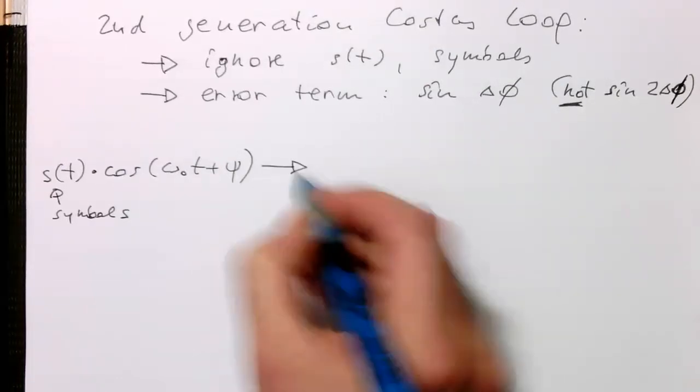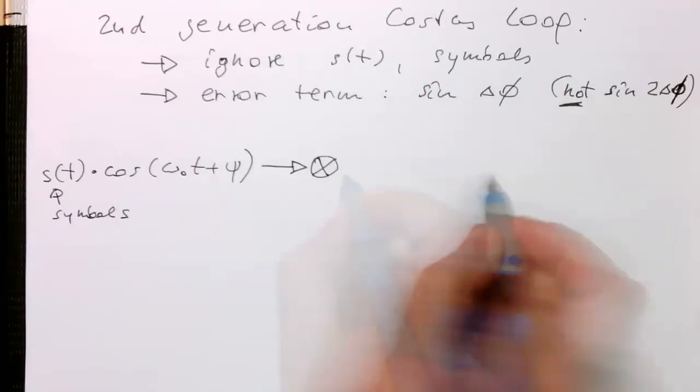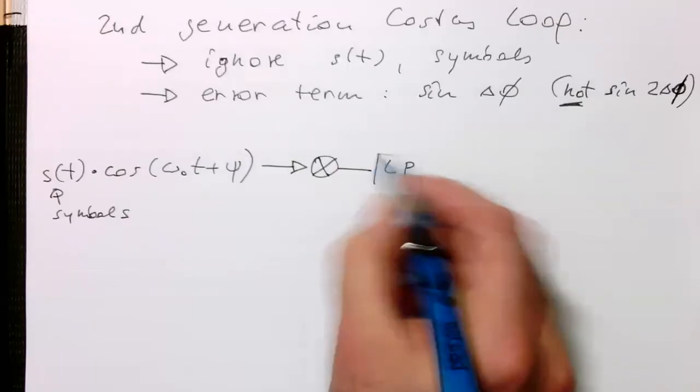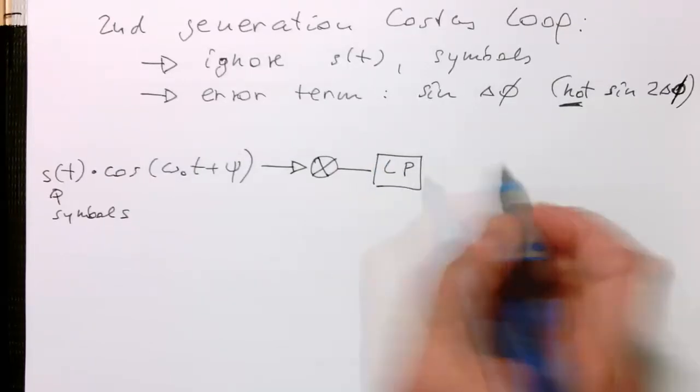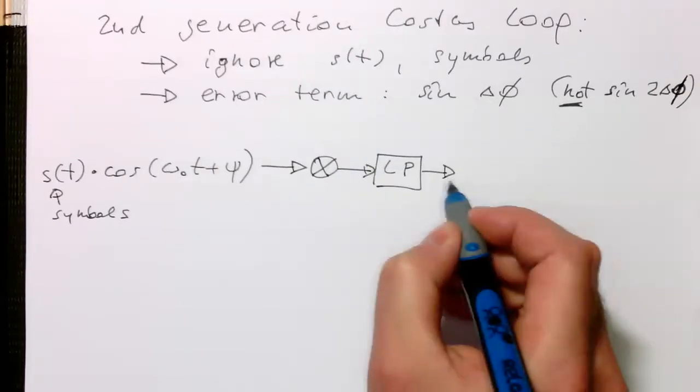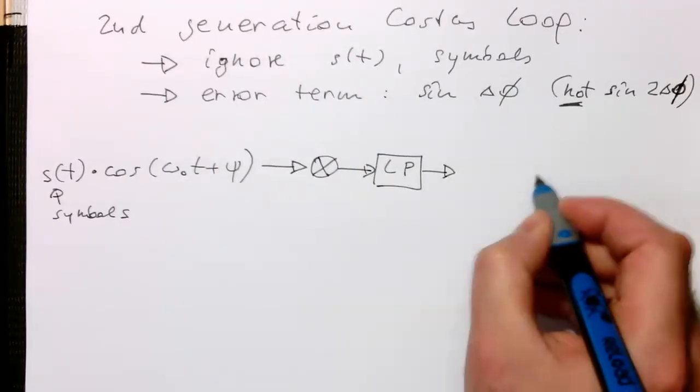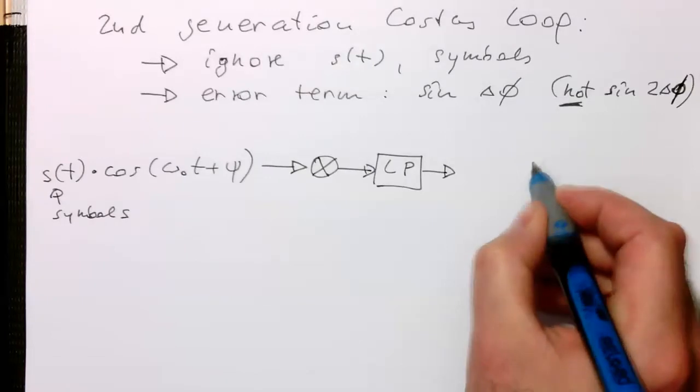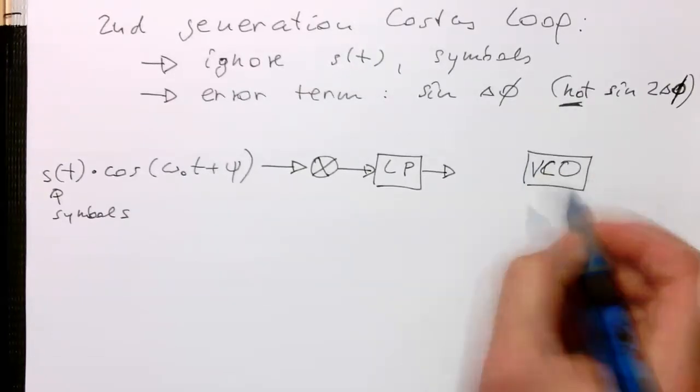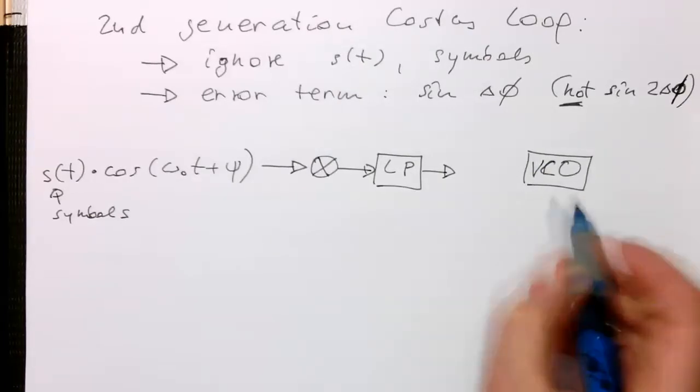Then we feed them with a carrier into our multiplication unit as before. And then we are low-pass filtering that also as before in our PLL. So now I just leave a gap there. The signal then in our normal PLL would just directly run into our VCO.